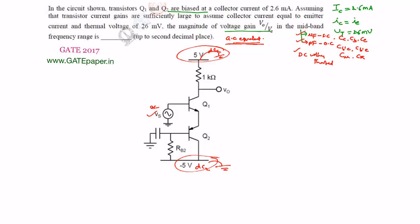Look at the Q2 transistor. Identifying its terminals: this is emitter of Q2, this is collector of Q2, this is base of Q2. Collector is at AC ground, and base is also at AC ground because the capacitor is acting as short circuit. So base and collector are shorted — this is called a diode-connected transistor, or diode-connected BJT.